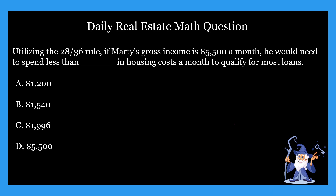Hopefully you guys came up with your answer. If you need more time, feel free to pause again and work out the problem. The answer is going to be B — that's right, it is $1,540. According to the 28 by 36 rule, Marty would need to spend less than $1,540 in housing costs a month to qualify for most loans.